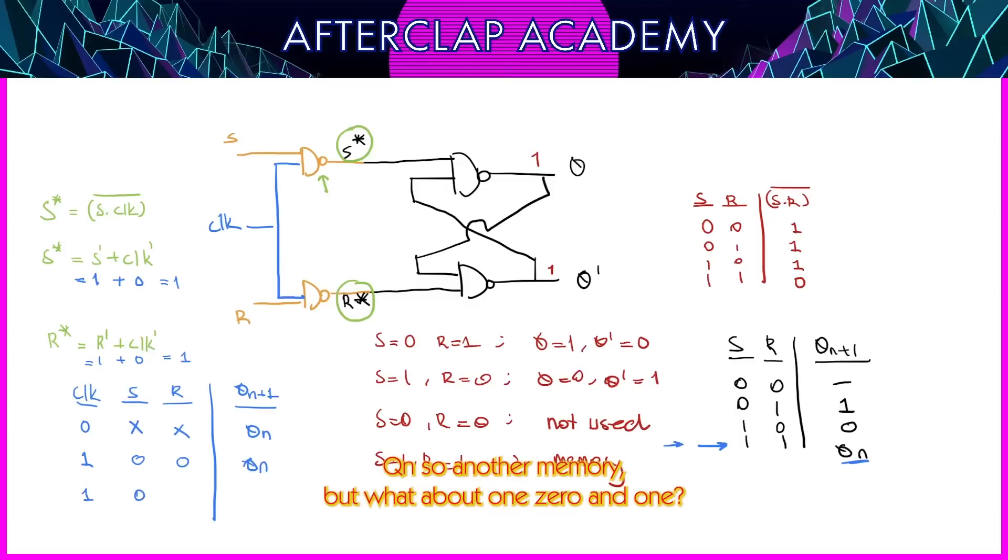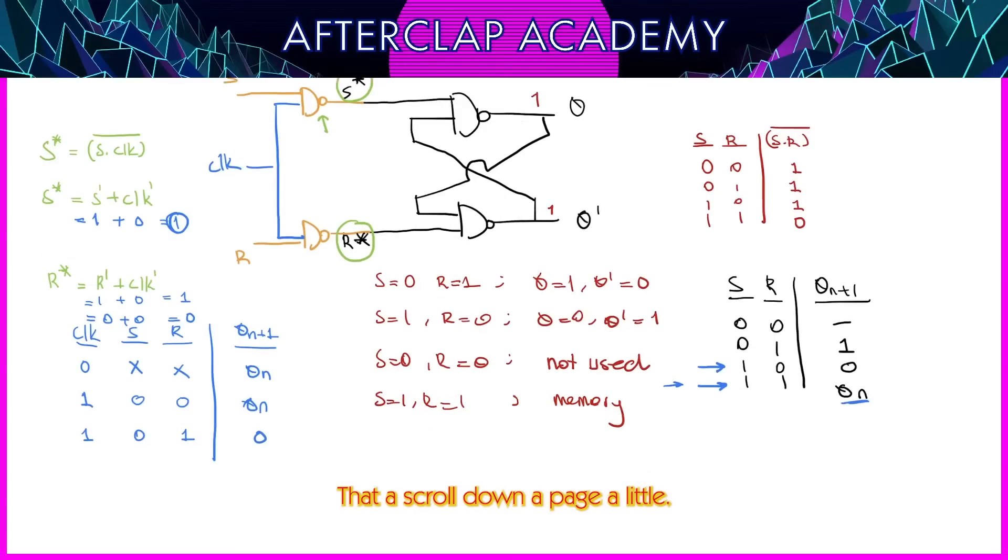But what about 1, 0, and 1? In that case, as you can see, S prime again becomes 1. However, this time, R prime becomes 0 or 0, that's going to be 0. So in that case, notice that S is 1 and R is 0, that's going to be 0. Let us scroll down the page a little.